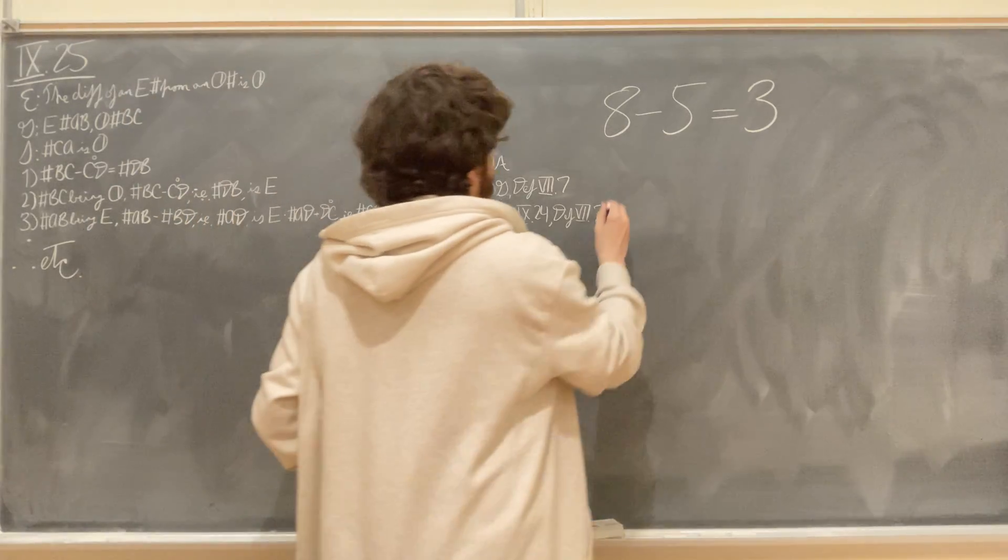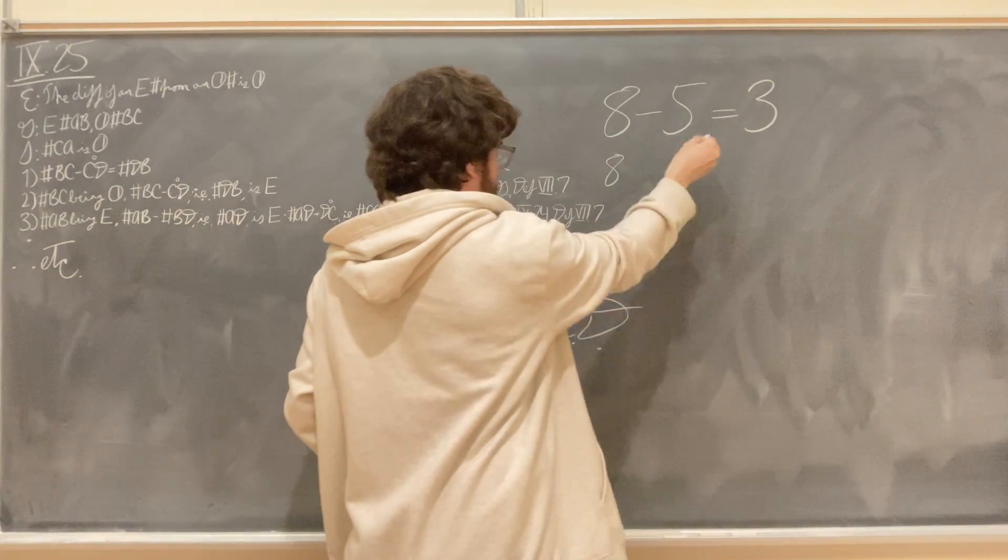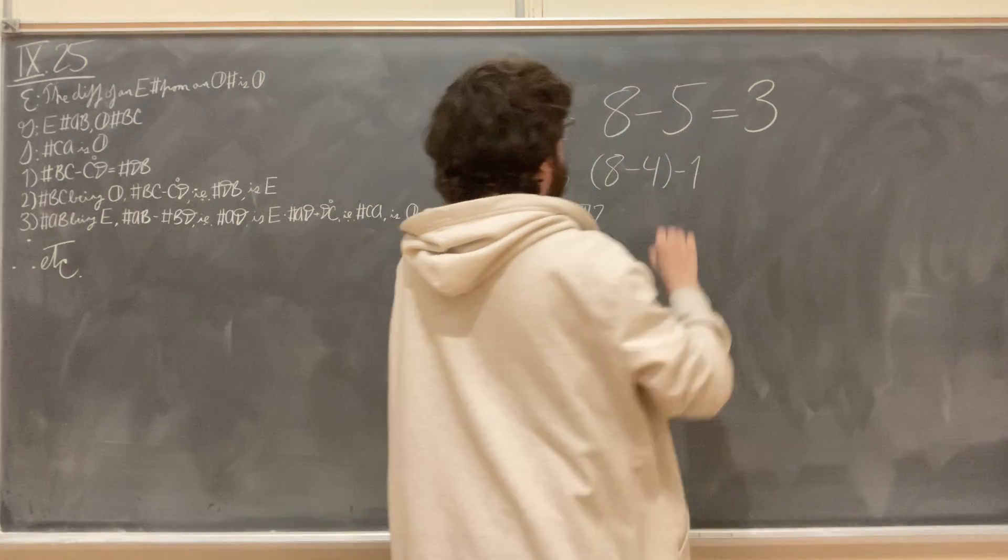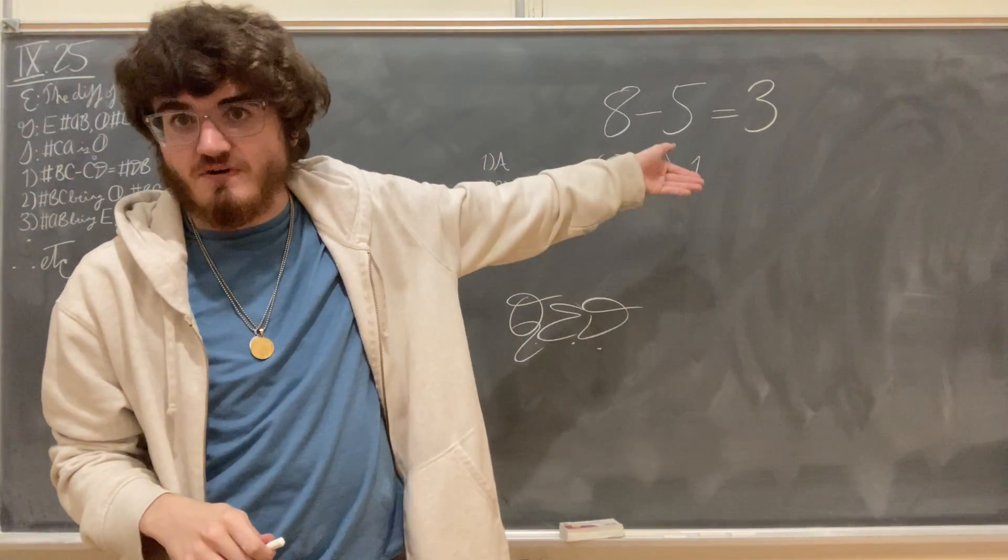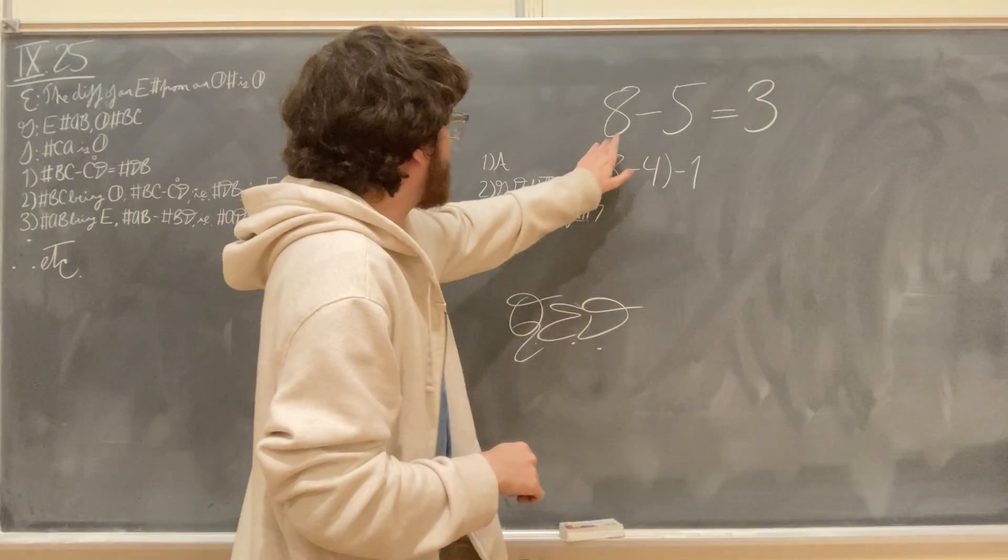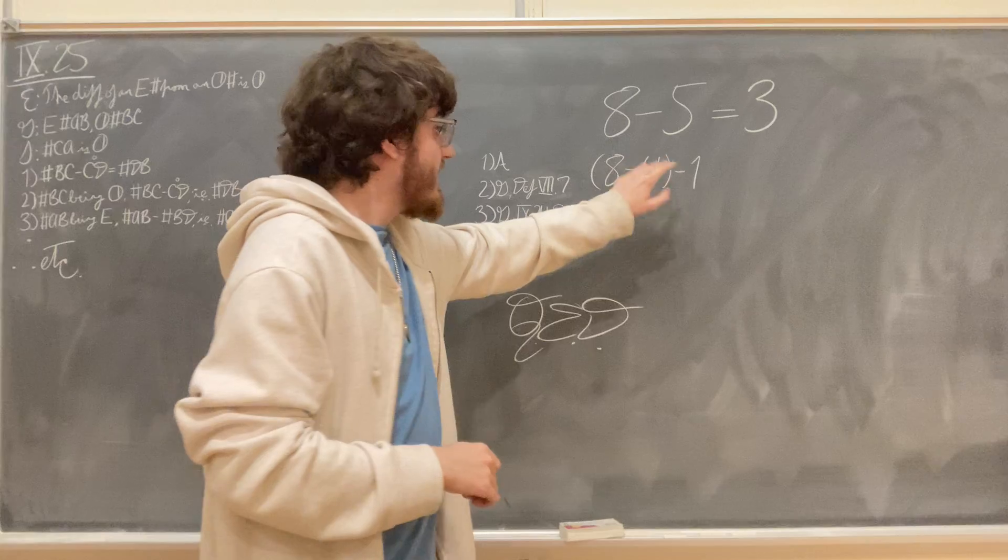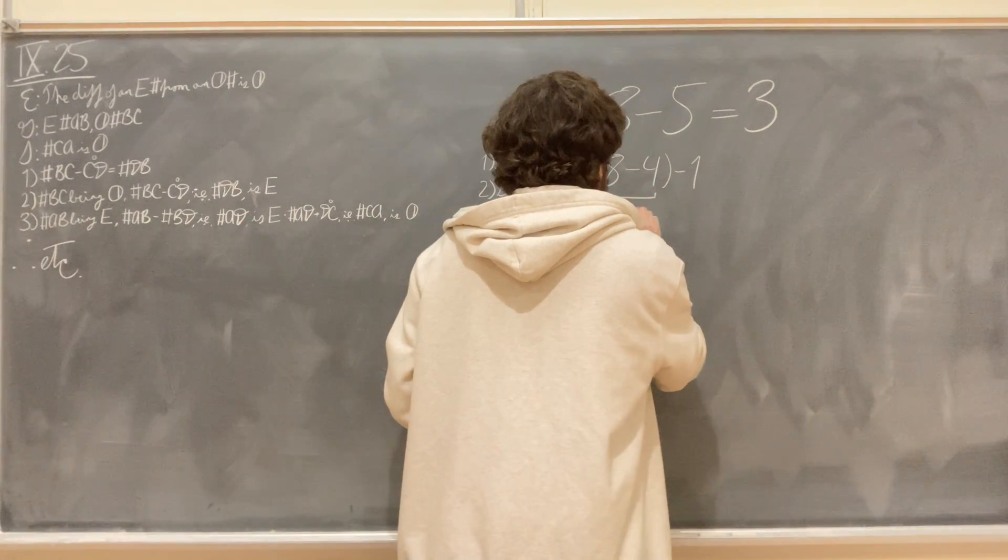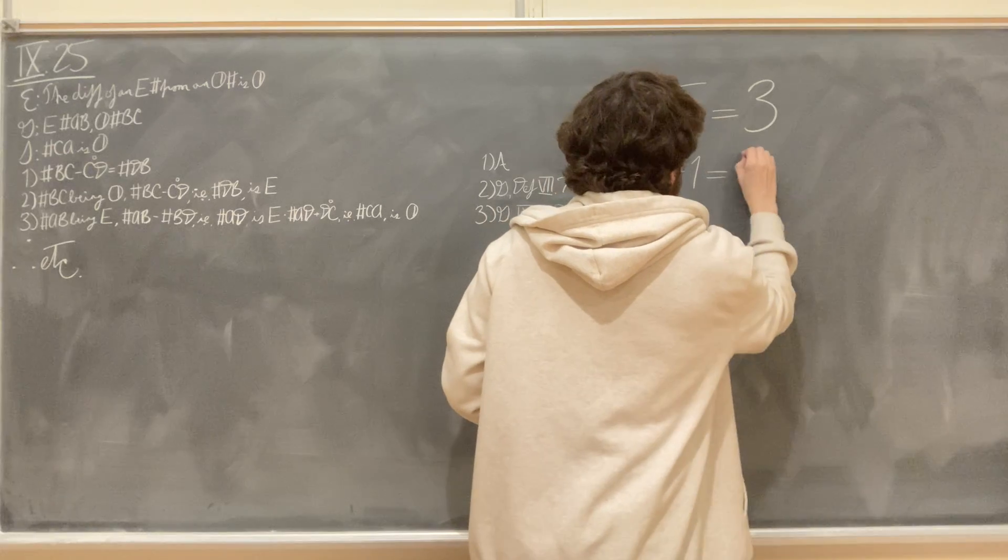How Euclid goes about proving that is he says that what this really is is it's 8 minus 4 minus 1 because he takes the unit away from the odd number and is therefore left with an even number. He takes the difference of the first even number from the remaining even number, which we know is itself even. This will still be the number 3.